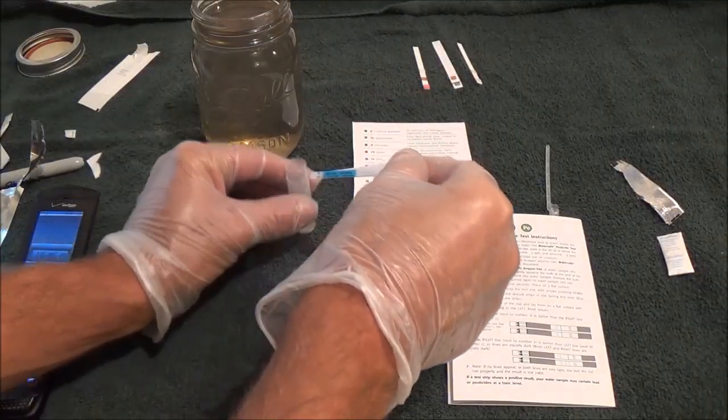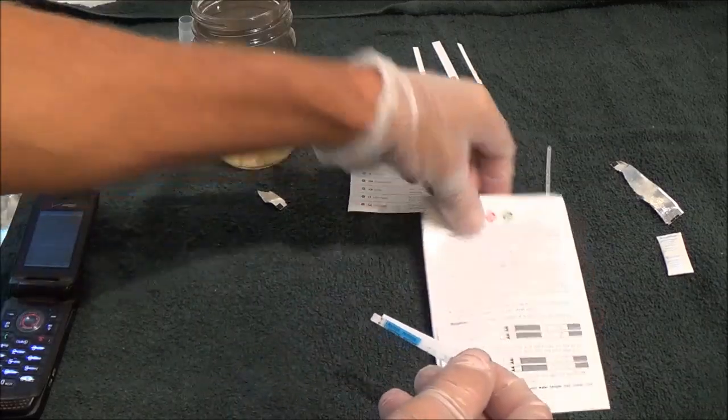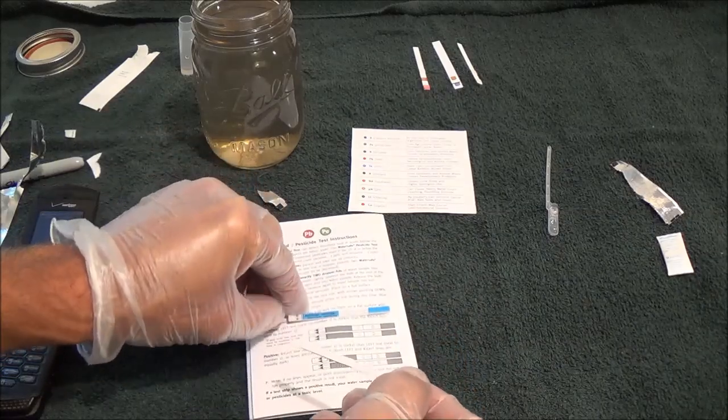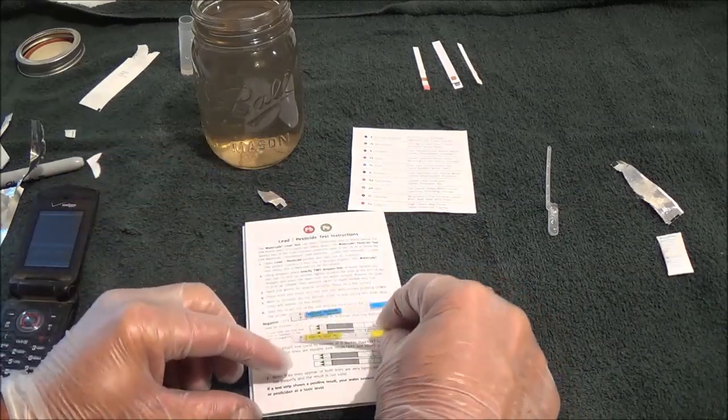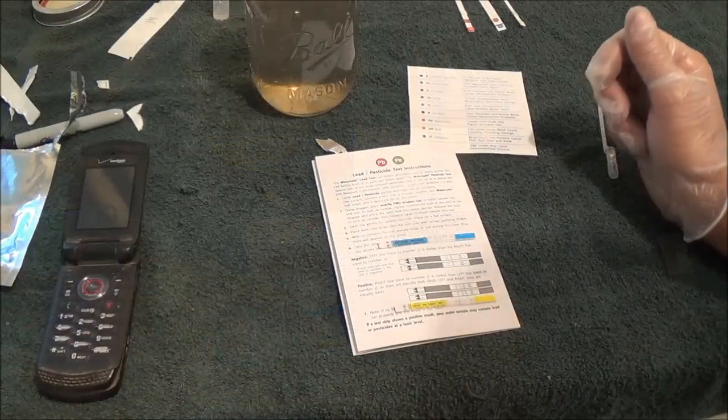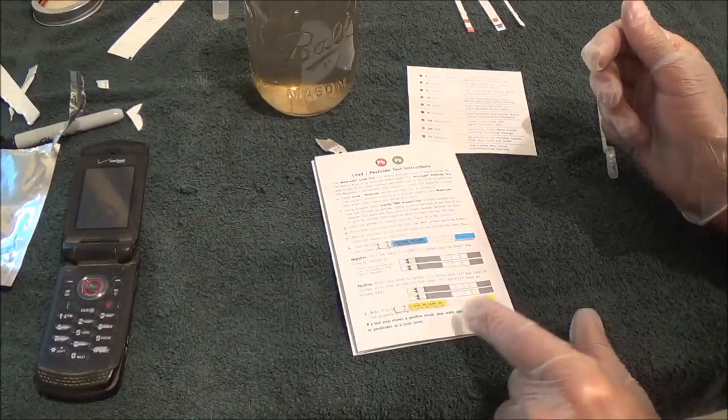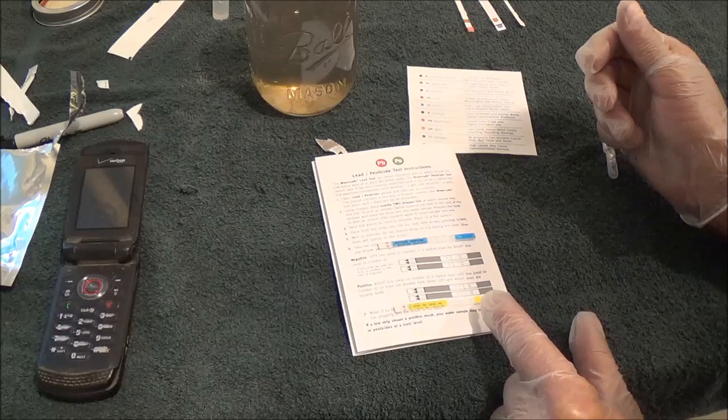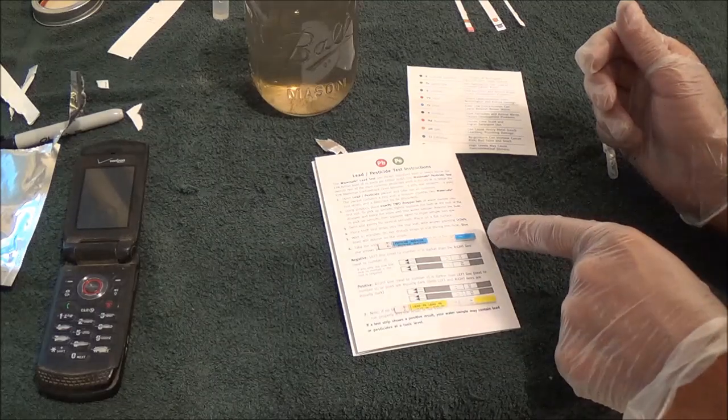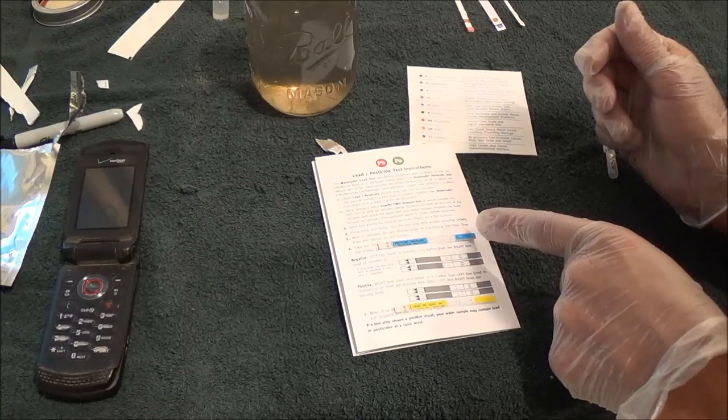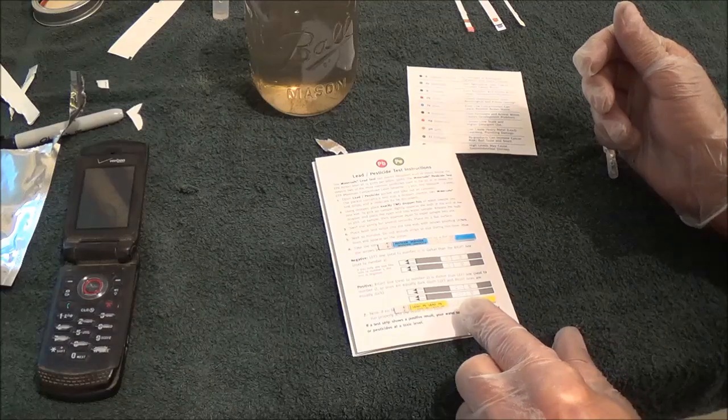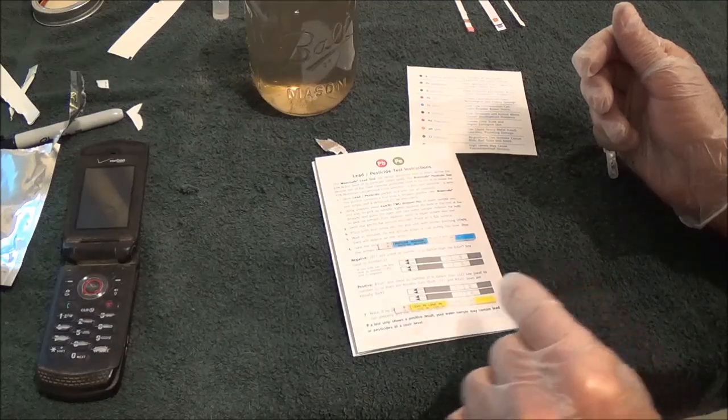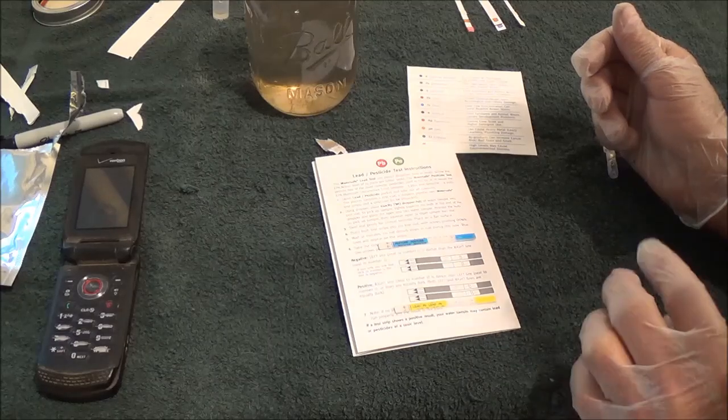Okay, so our 10 minutes are up. I had to stop for a second so I could read it. So negative means the left line next to number one is darker than the right line next to number two. For positive, it's the opposite. So on both of these, the blue line is close to the number one. Oh, I see, it's not 11 and 22, they just cut these off. That's a one and a two. So for this test here, my lead and my pesticide, both of them are negative.